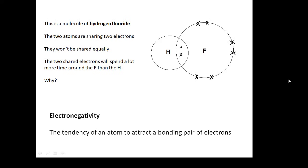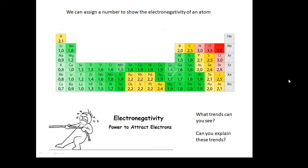Electronegativity is the tendency of an atom to attract a bonding pair of electrons. The more electronegative an atom is, then in a bond, it will get a bigger share of the electrons. And we can give electronegativity a number.